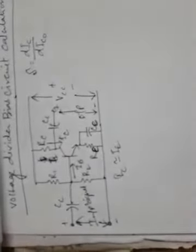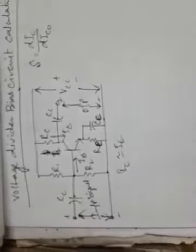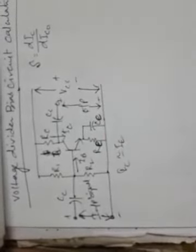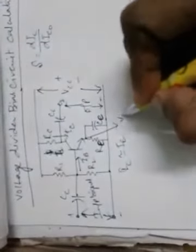We keep discussing the increase of collector current because S equals dIC/dICO — that is, how much change happens in IC with respect to ICO. So for each biasing circuit we must look at the change in IC. Here, if IC increases due to rise in temperature or other reasons, the voltage drop across RE will be increased, raising the voltage at the emitter node VE.